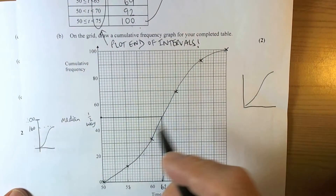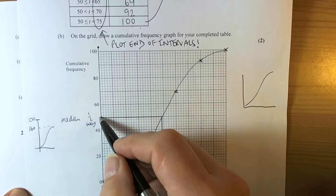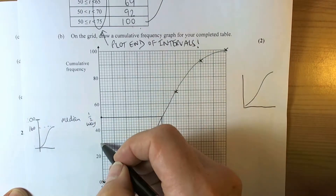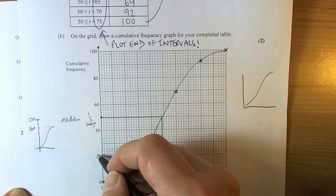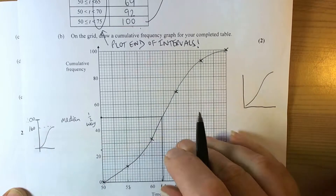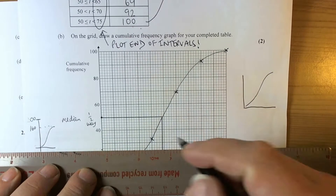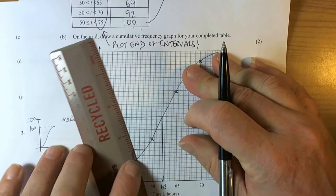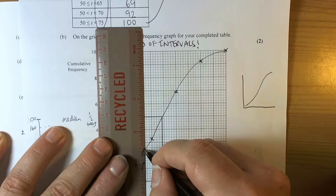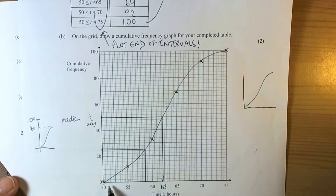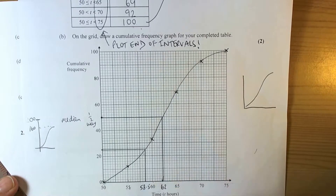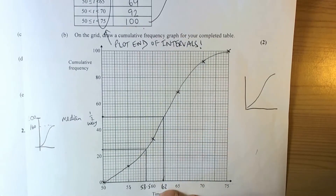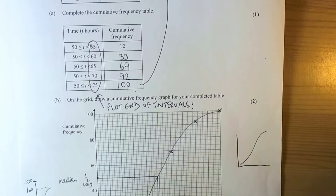So we go back to the graph. Halfway was 50, so a quarter of the whole thing is half of that: 25. We go across at 25 to our graph, being careful with accuracy, and then read off the value: 55, 57.5, 58, 58.5 — so approximately 58.5 for the lower quartile value.